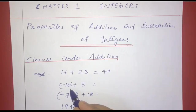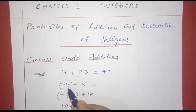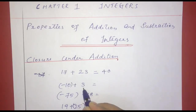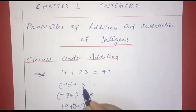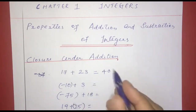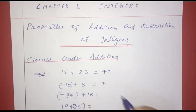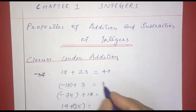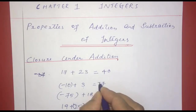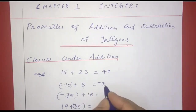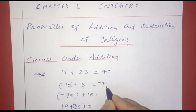Next one: negative 10 plus 3. One is negative and one is positive. We subtract the smaller from the larger, giving us 7. The sign is negative, so the answer is negative 7. Negative 7 is an integer.